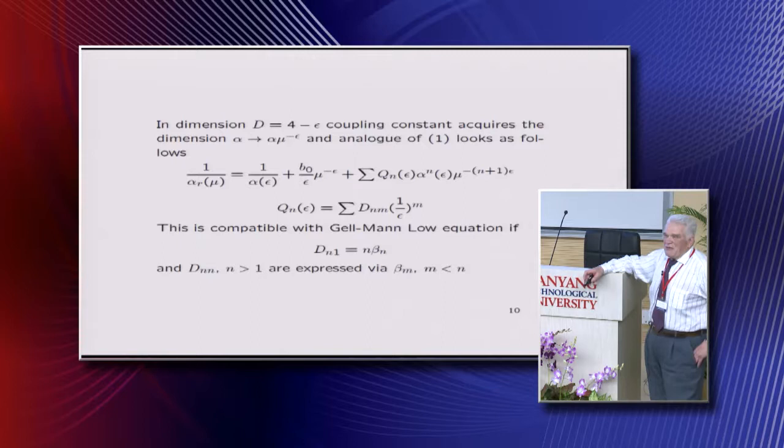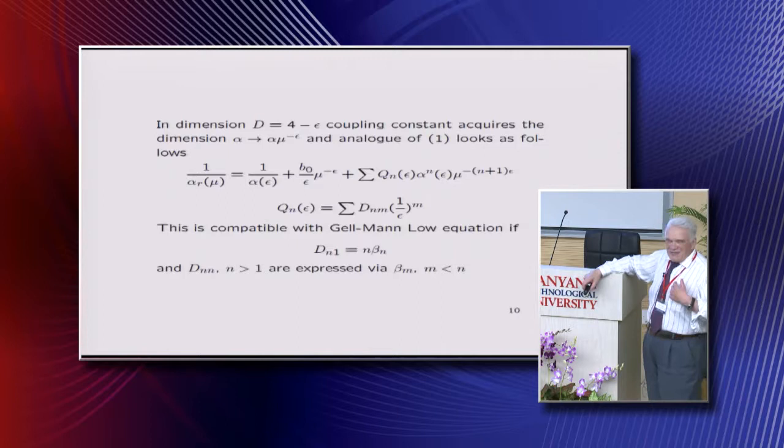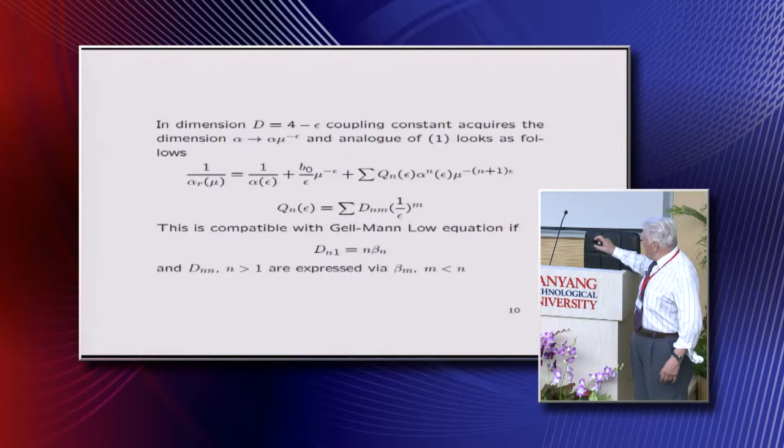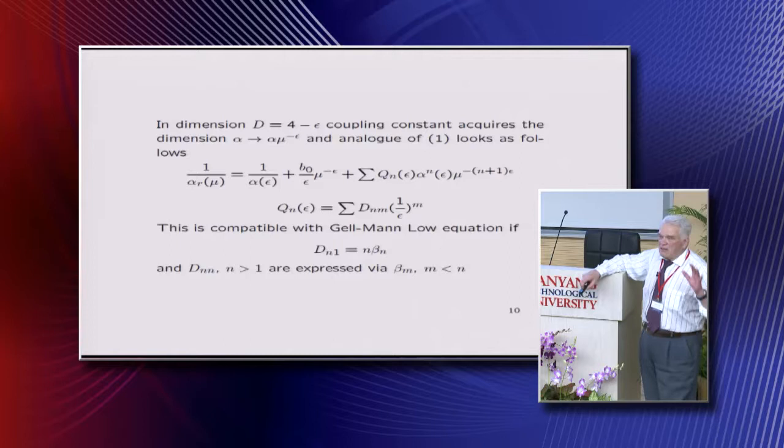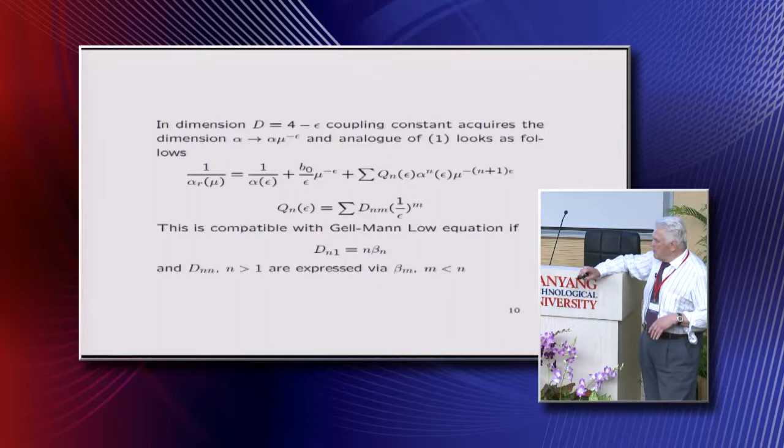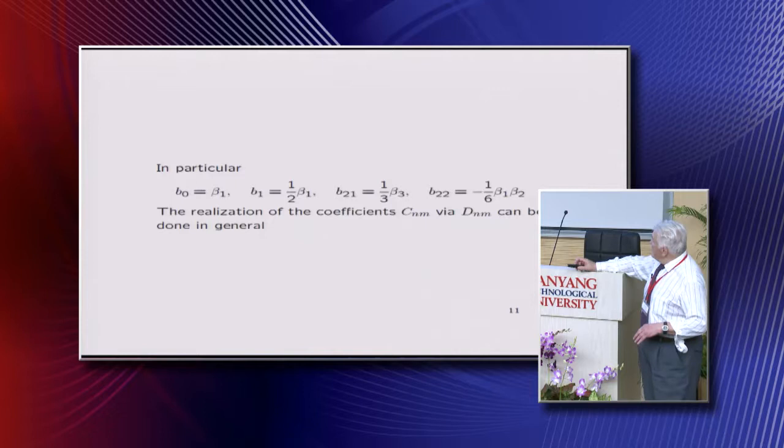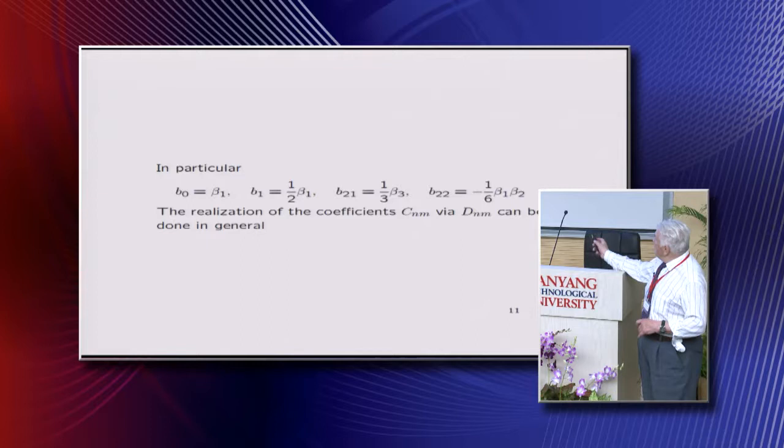And so when Jack and Osborn calculated beta_2 in dimensional regularization, they got 34, and I was to get 68, because there is this function 2, coefficient 2 in this. It also took some time to realize that dimensional regularization and the hypothetical lambda regularization have coefficients which are different by some integer numbers and so on, which one must introduce here.